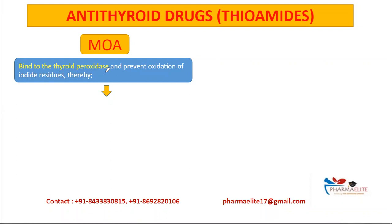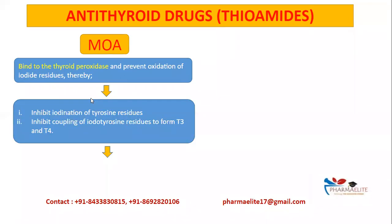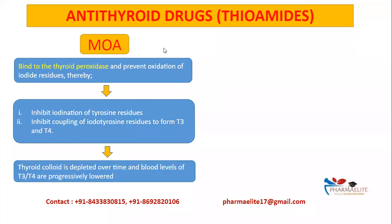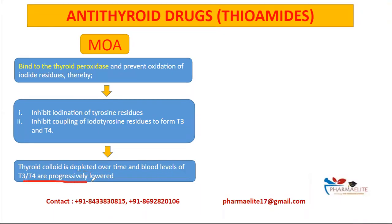Thyroid peroxidase catalyzes the three main reactions of thyroid hormone synthesis. By binding to this enzyme, propylthiouracil prevents the oxidation of iodide residues. This leads to inhibition of the iodination of tyrosine residues, and also inhibits the coupling of iodinated tyrosine residues to form T3 and T4. As a result, the thyroid colloid — the pool of thyroid hormone — is depleted over time, and blood levels of T3 and T4 progressively fall.